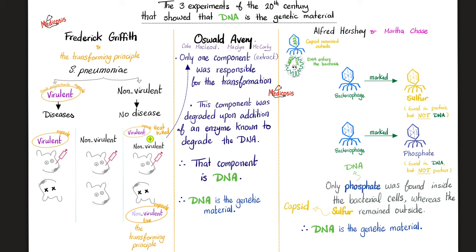Griffith injected the virulent, capsulated strain of pneumococci into a mouse — the mouse died. That's why it's virulent. Another experiment: inject the non-virulent into a mouse — the mouse is alive and well, which makes sense. But when you take the virulent bacteria, kill it with heat, add the non-virulent to the same sample, and inject both into a mouse — the mouse is dead. Wait — you killed the virulent. What's left is live non-virulent. How does non-virulent kill the mouse? That was the question.